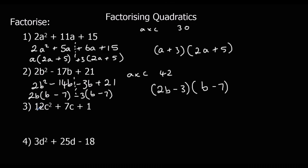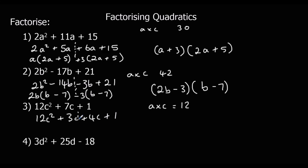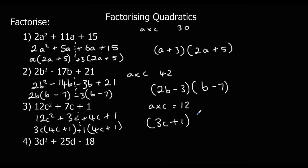Third question: a times c is 12. The factors we're looking for are 3 and 4. So we rewrite as 12c squared plus 3c plus 4c plus 1. Cutting it again and taking 3c out of the first bracket leaves 4c plus 1. We get 4c plus 1 in the second bracket too, and what's left is just 1. So the two brackets are (3c plus 1)(4c plus 1).